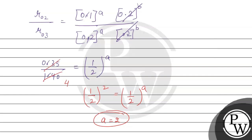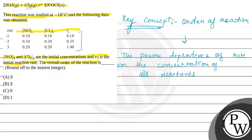Hence, A plus B gives the overall order of the reaction, which will be 2 plus 1 equals 3. The overall order of the reaction is third order. The answer to this question is option A. Hope you understood it well. Best of luck.